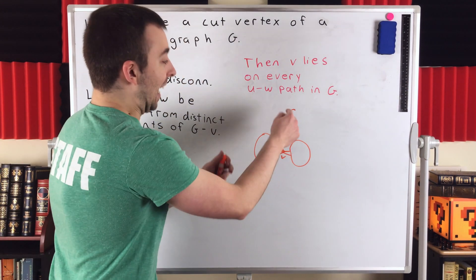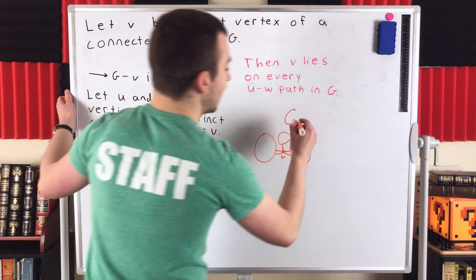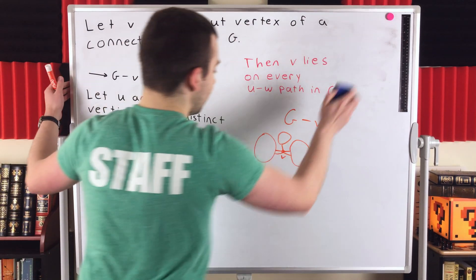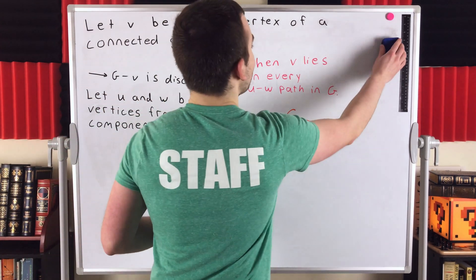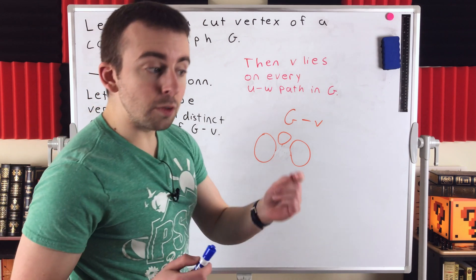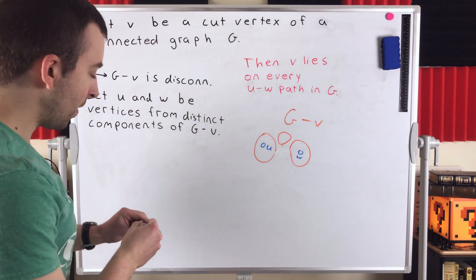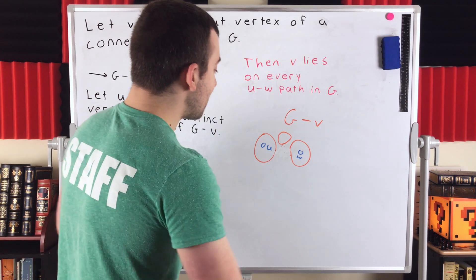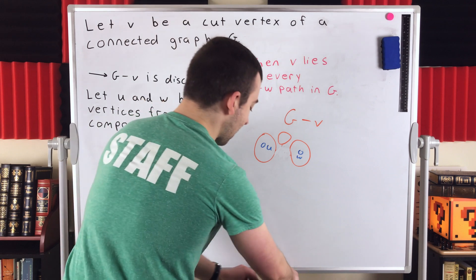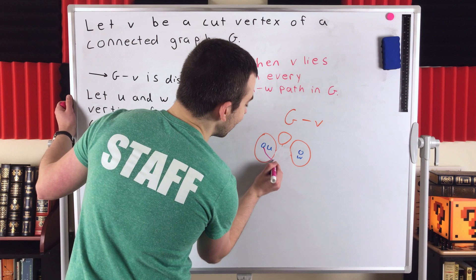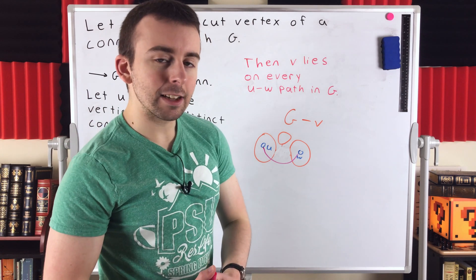Once we delete V — in G, these aren't components, this is just one whole component because the graph is connected — but we've got this cut vertex V. We delete it, and then we're looking at G minus V. Then we've got our disconnected graph, which has at least two components, but it might have three, four, five, or more. Then we take two vertices from distinct components: a vertex U in that component and a vertex W in that component. They're in distinct components because every path that connected them had that vertex V, which is now gone. If there was still a path connecting them — a path that didn't contain V — then clearly this would just be one component, and those two vertices wouldn't be in distinct components.